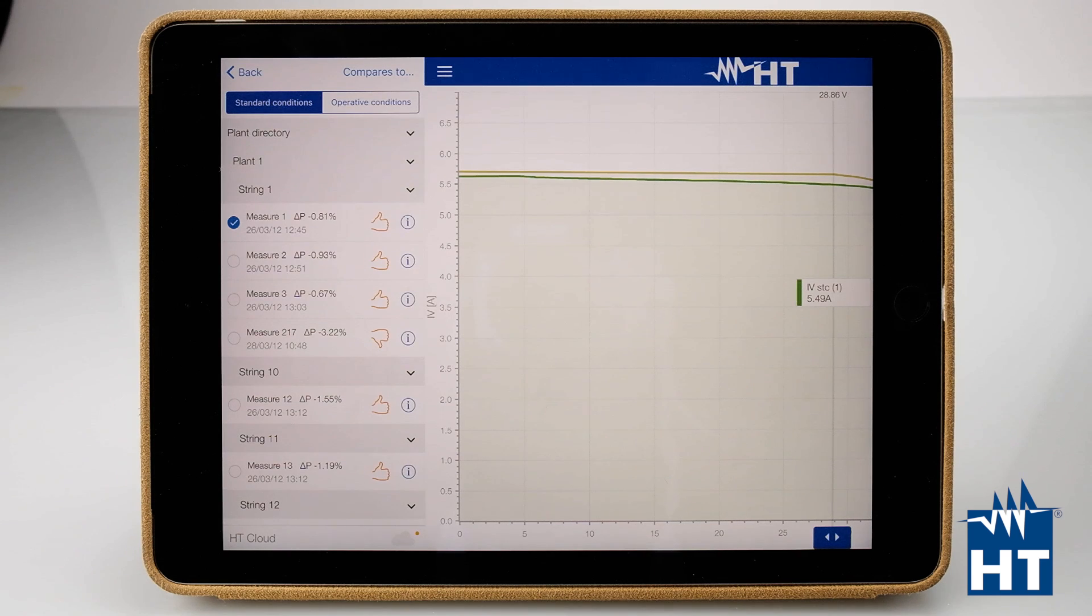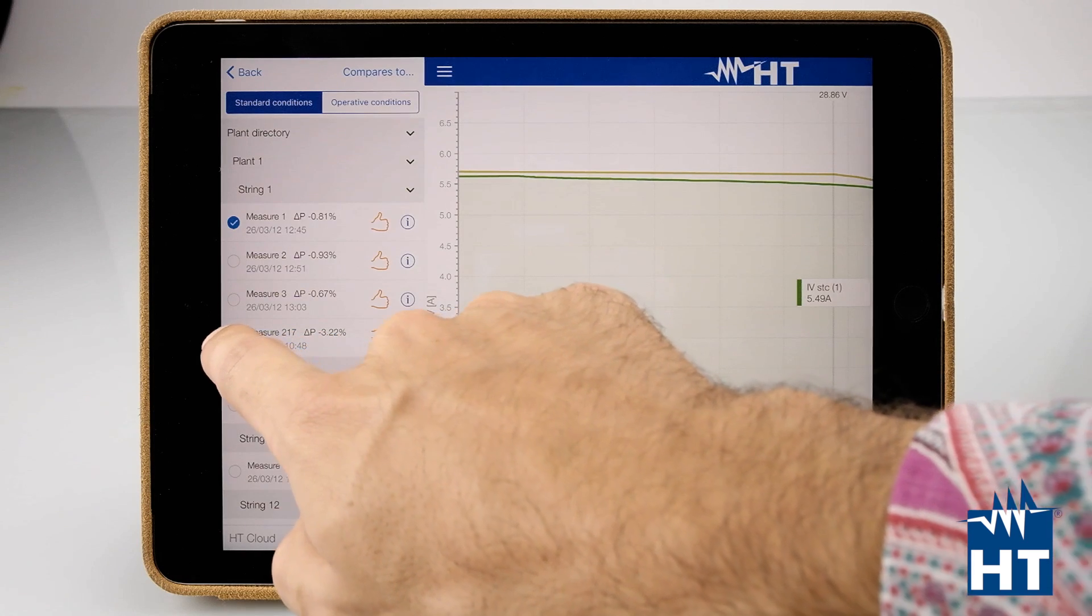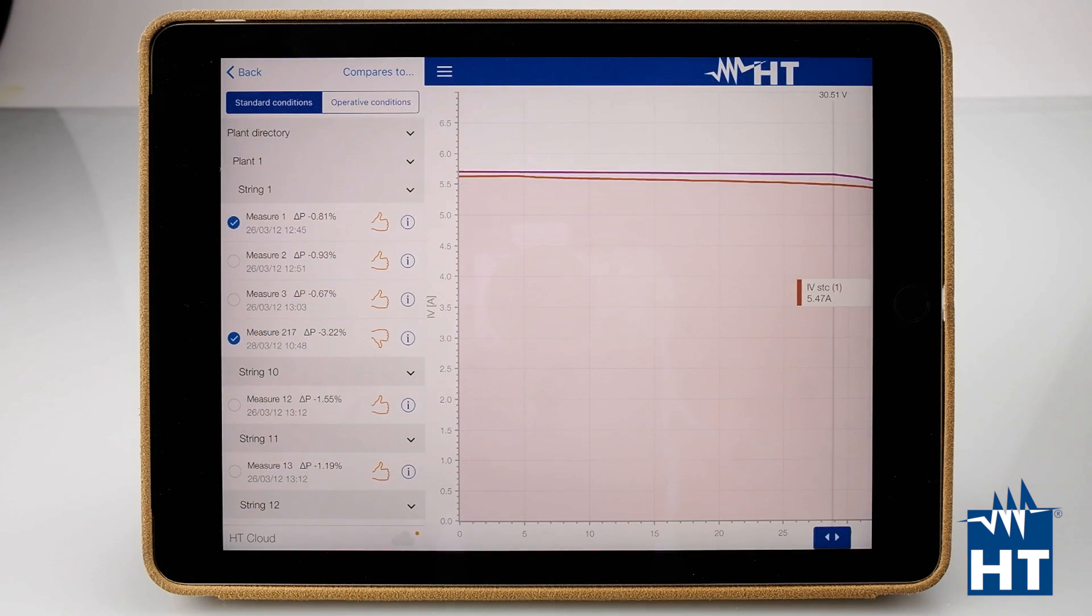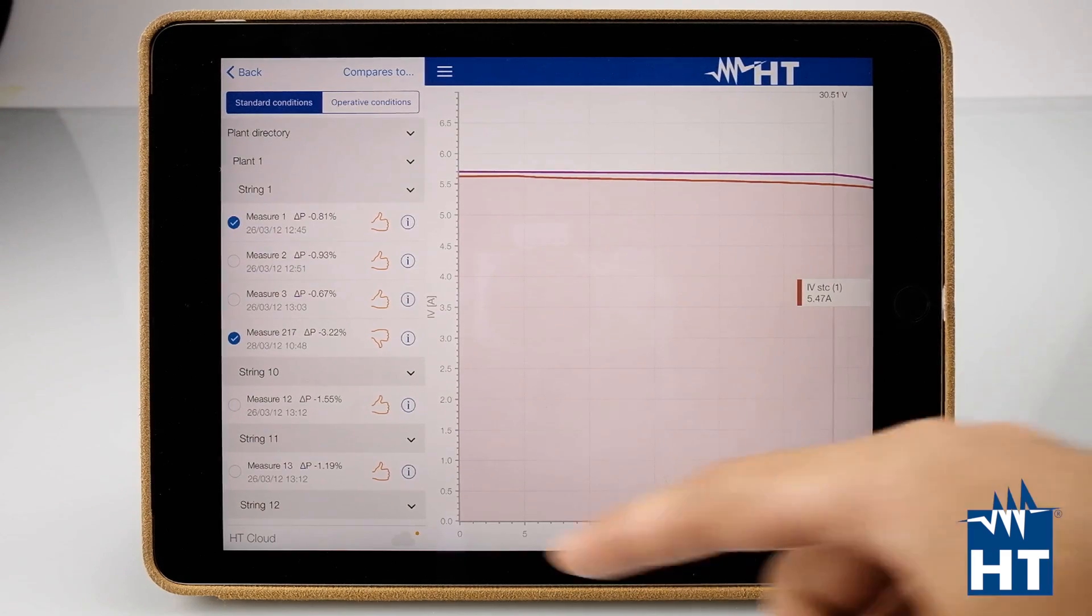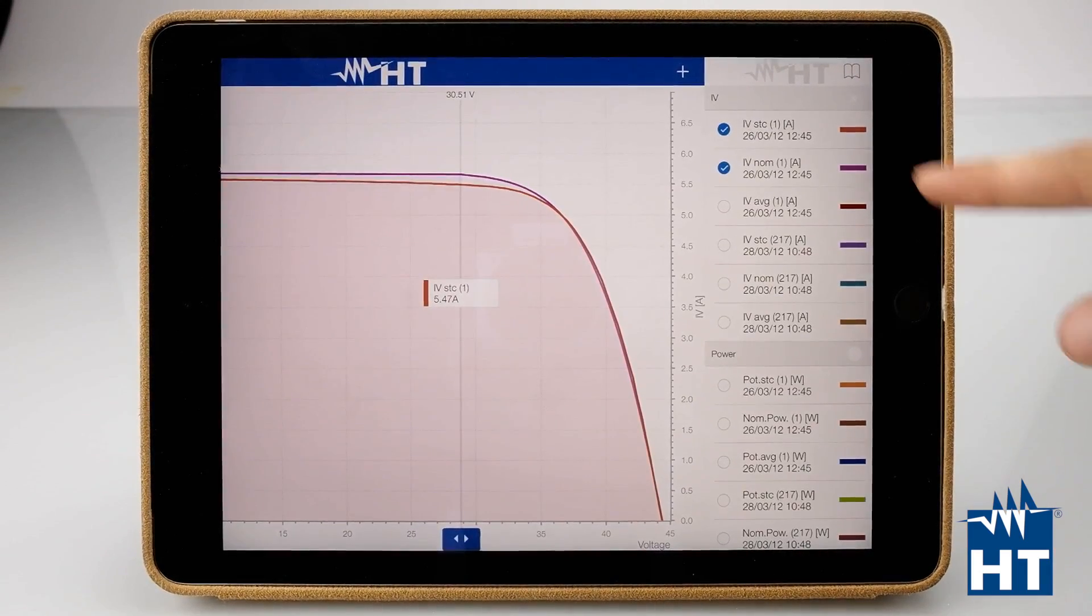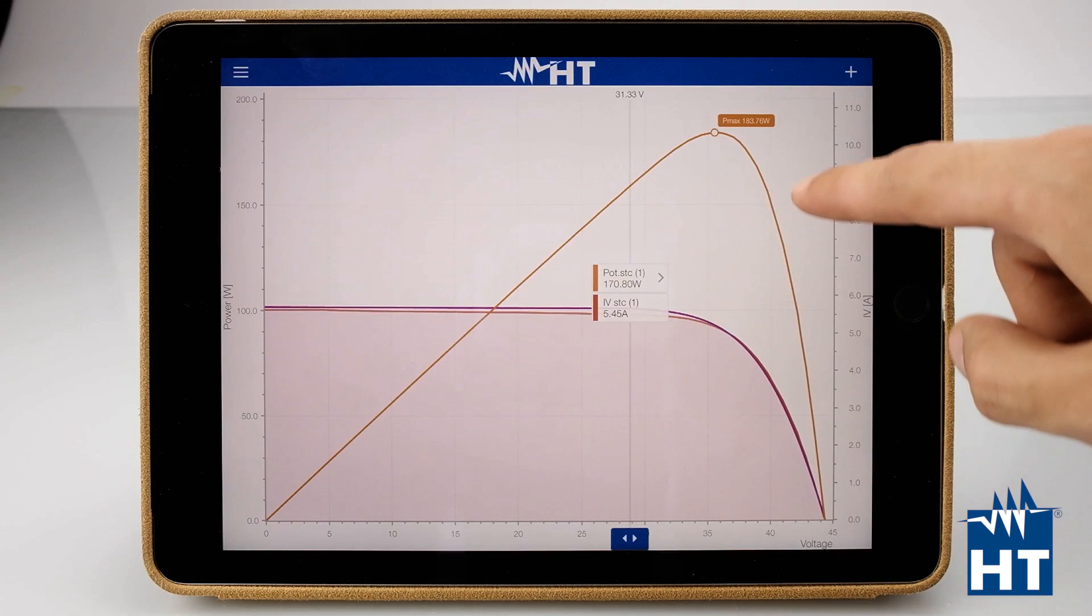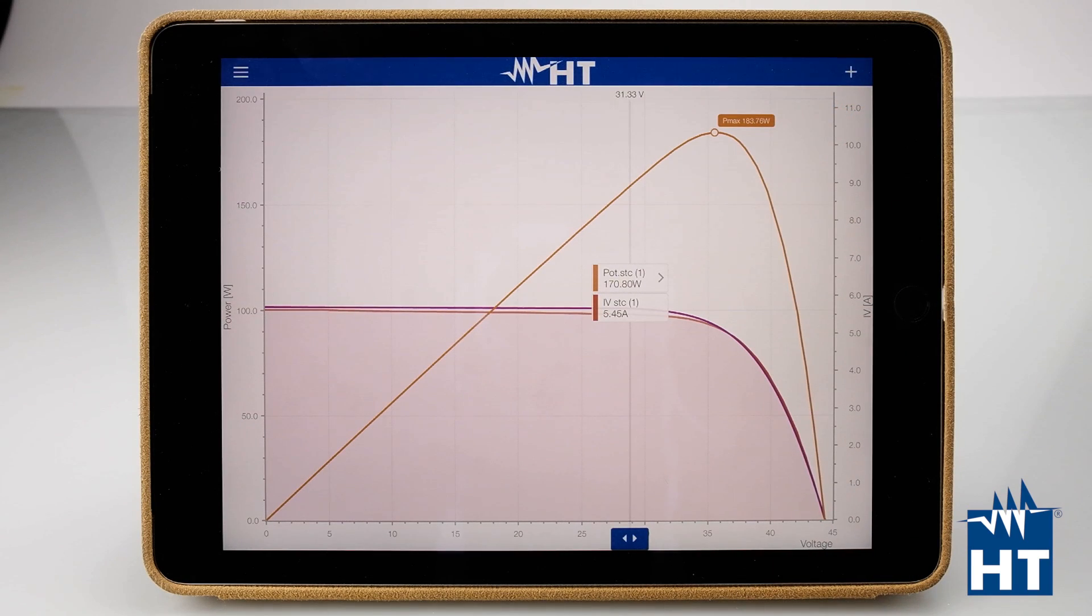The other important part is that you can compare the measurements from two different periods. I've done these measurements today and I've done this one two weeks ago or two months ago. Now I have two measurements on the same graph and I can compare also the power. For example, power STC with the maximum power point here and then you have now the complete data to say something about, this module is not okay or maybe this string is not okay or this plant needs more maintenance or let's just clean the panels.